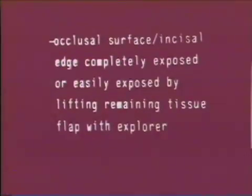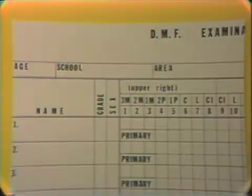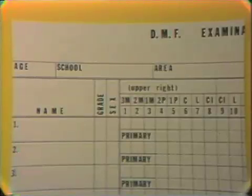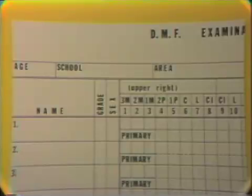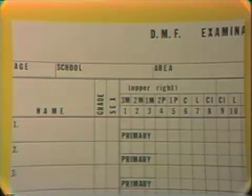It should be noted that a tooth to be considered erupted must have its occlusal surface or incisal edge completely exposed, or easily exposed by lifting the remaining tissue flap with an explorer. The examiner must dictate to a recorder, using a record form, a total of 32 number codes corresponding to the conditions in which he finds each of the 32 spaces. Supernumerary teeth are not counted, even though they may be carious. When both a permanent tooth and a deciduous or supernumerary tooth occupy the same space, only the permanent tooth is considered.